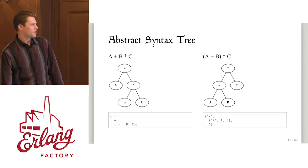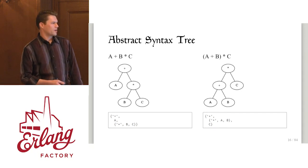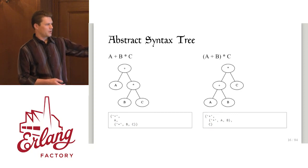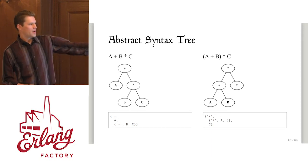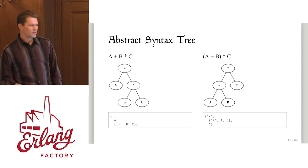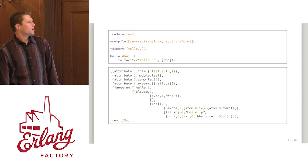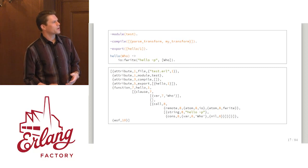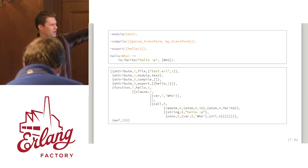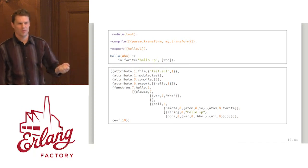If we're going to represent this as data, we want to be able to manipulate this tree. We have a tuple where the first element is the operation we want to do, and the next two elements are the operands. Let's look at some real parse trees — they get quite a bit more complex. Here we have an extremely simple module. We want to see what this looks like in abstract format, and this is what we'd be starting to manipulate in our parse transform.